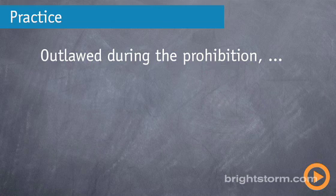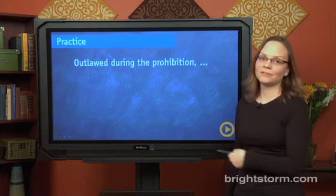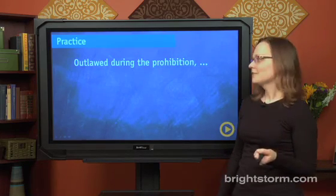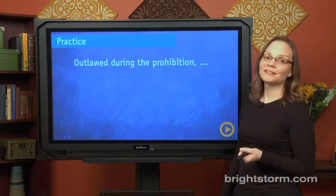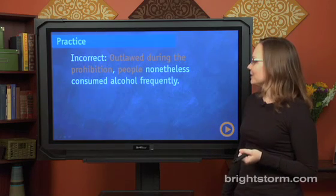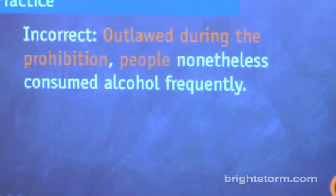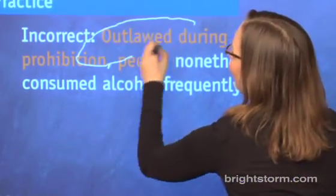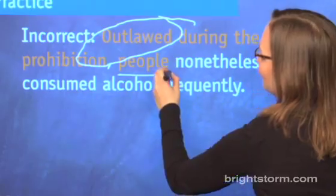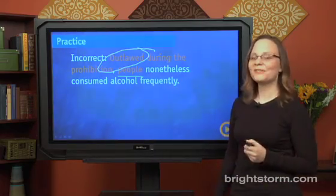Now it's time for you to try. If a sentence started 'outlawed during the prohibition,' what would be a good noun to follow that modifier? What does 'outlawed during the prohibition' describe? Let's start with what it's not. A bad way to start the sentence would be: 'Outlawed during the prohibition, people nonetheless consumed alcohol frequently.' The modifier is describing people — but people were not outlawed during the prohibition. Rather, it was...